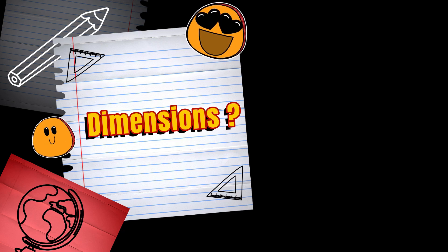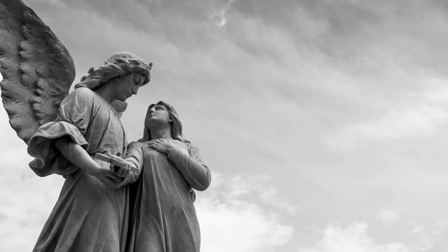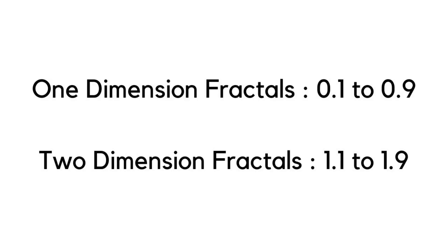Do fractals have dimensions? Just like we have objects that are three-dimensional, fractals also have dimensions, but they include decimals. One-dimensional fractals range from 0.1 to 0.9, and two-dimensional fractals like coastlines range from 1.1 to 1.9.